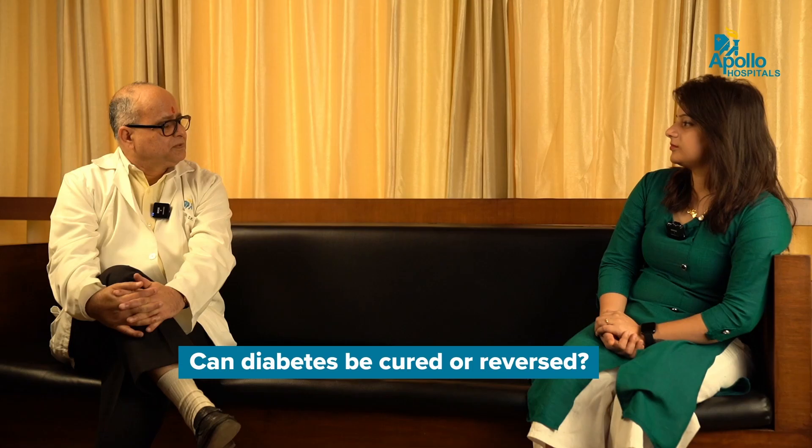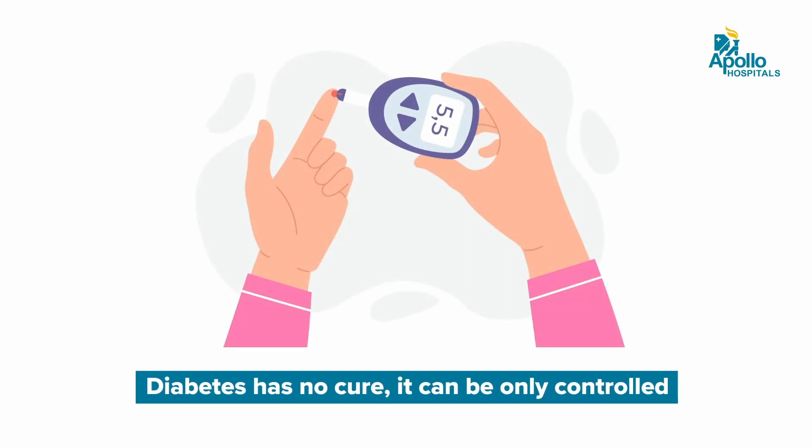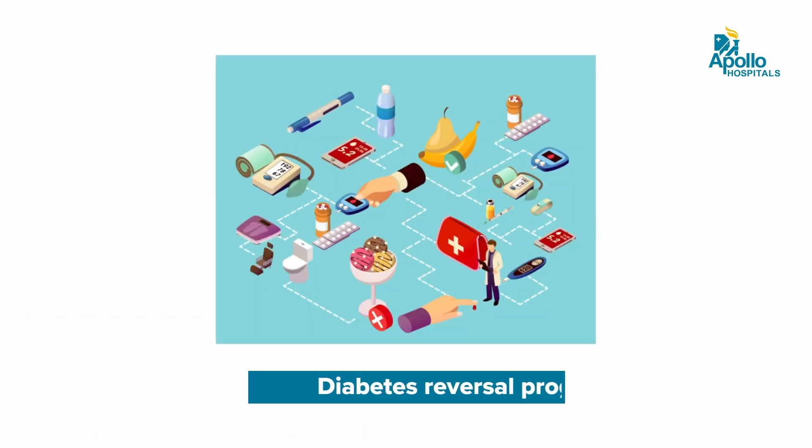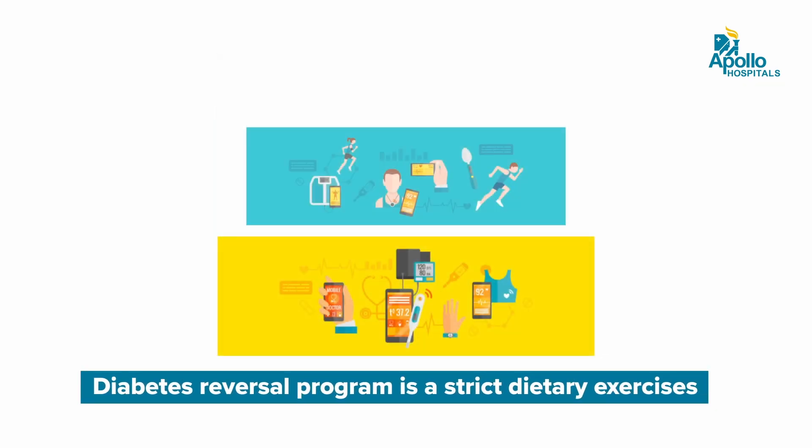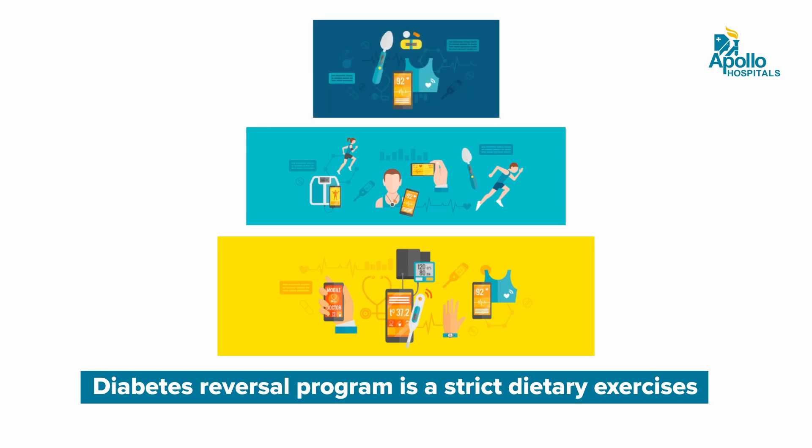Can diabetes be cured or reversed? A lot of people come and ask this. First of all, diabetes can't be cured — it can be controlled only. As for reversal, you may have heard of many diabetes reversal programs on WhatsApp or YouTube. I will tell you definitively: diabetes reversal programs are essentially just strict dietary regimens and exercise. They control diabetes for a short period of time and call it reversal.